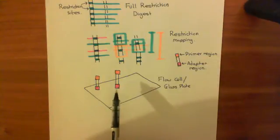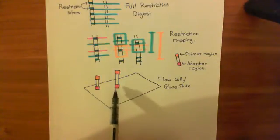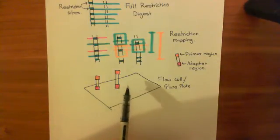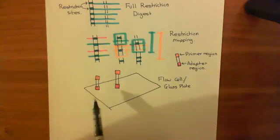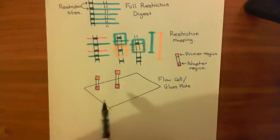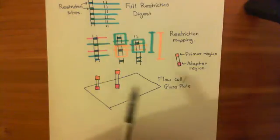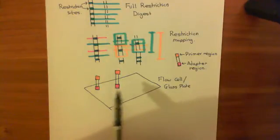The adapter regions are a portion of DNA — they're still a bit of DNA, but they allow it to attach to this flow cell, which is just basically a glass plate, which allows these adapter regions to bind to it.